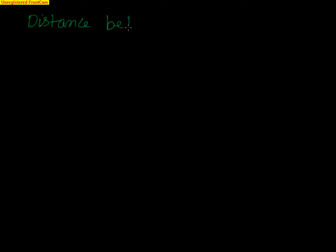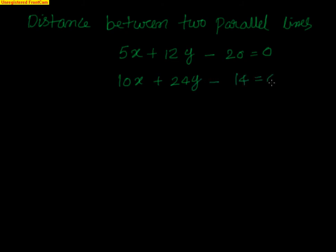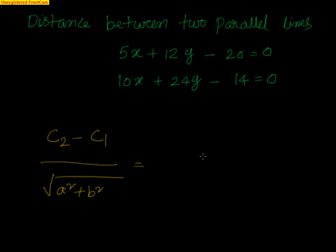Let us find the distance between two parallel lines: 5x + 12y − 20 = 0 and 10x + 24y − 14 = 0. We will apply the formula |C2 − C1| / √(A² + B²). But can we directly substitute 20 and 14? No — we should not do that yet.